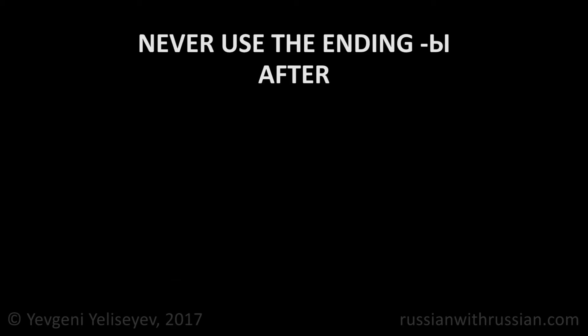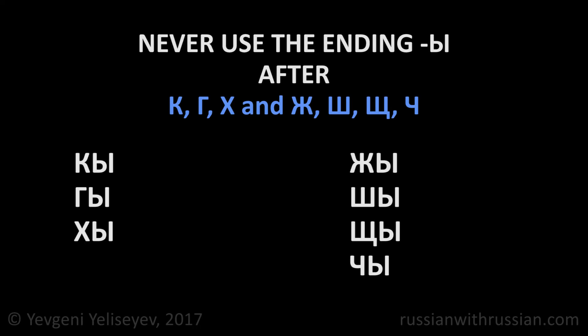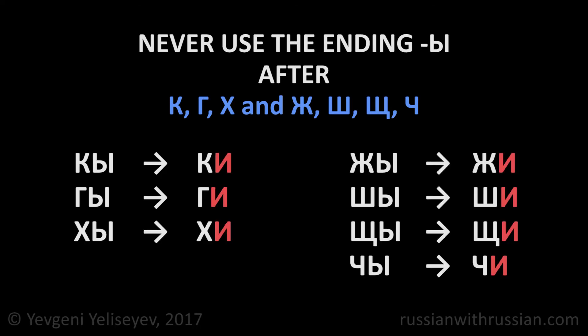We never use the ending ы after such letters as к, г, х, and the hushing consonants ж, ш, щ, ч. In this case, we always replace the ы with и.